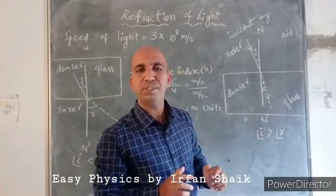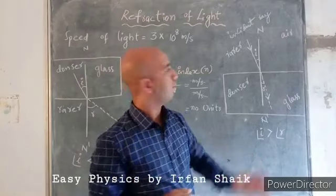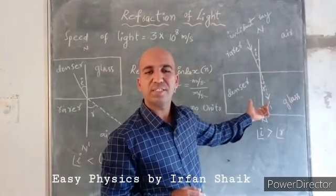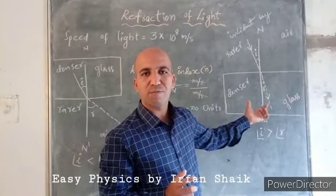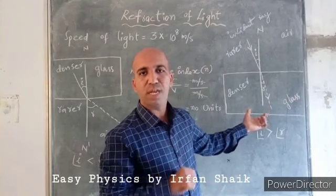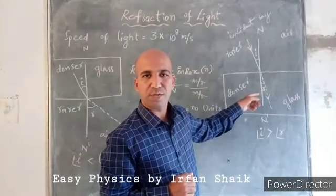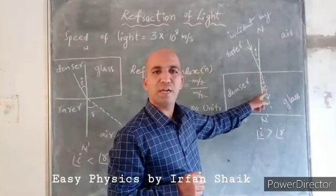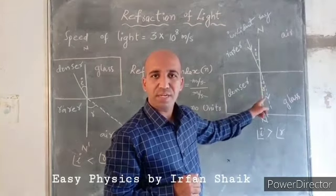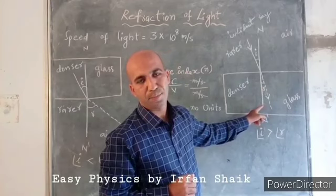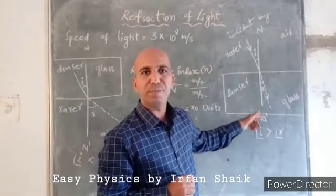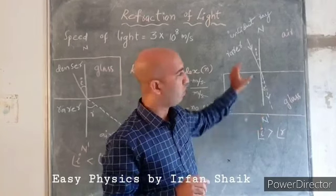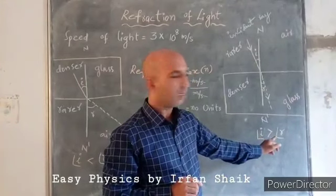Let us take the first case: when a light ray is travelling from air to glass. Air is called the rarer medium and glass is called the denser medium. When the light ray travels from rarer medium to denser medium, the angle of incidence is greater than the angle of refraction. That means the refracted ray bends towards the normal line, and the angle of incidence is always greater than the angle of refraction.